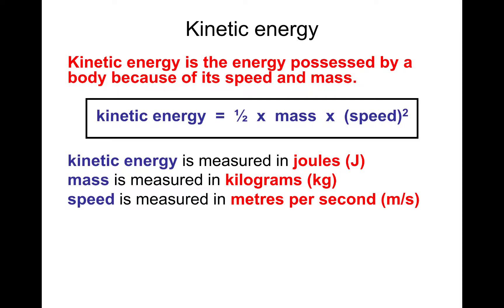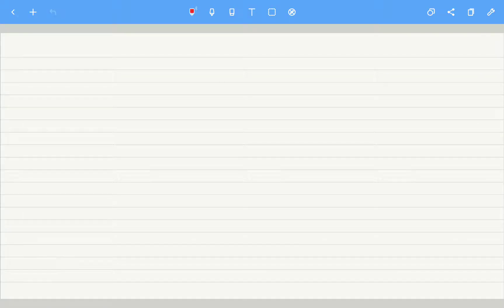I'd advise you write that down along with the units. Kinetic energy is in joules, mass is in kilograms, and speed is in metres per second. Then we'll show you the shorthand version of the equation and how to rearrange it.